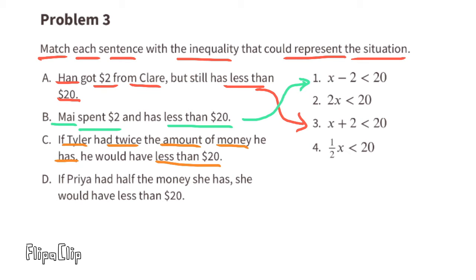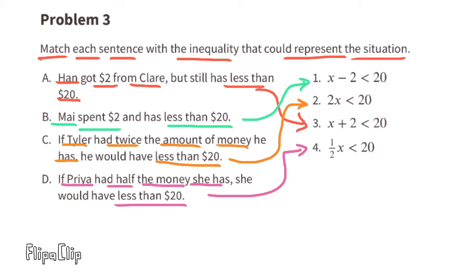Part c — if Tyler had twice the amount of money he has, he would have less than 20 dollars. Twice the money is 2x, and 2x is less than 20 — sentence c matches inequality 2. Part d — if Priya had half the money she has, she would have less than 20 dollars. Half the money is one half x, and one half x is less than 20 — inequality 4 matches sentence d.